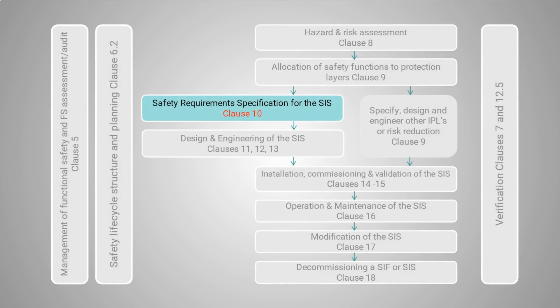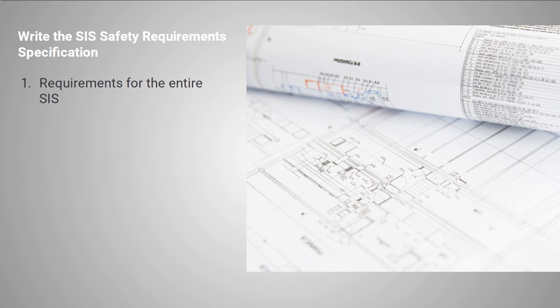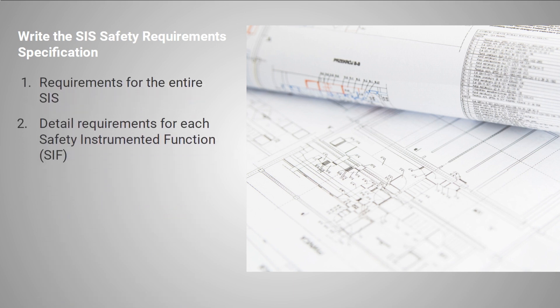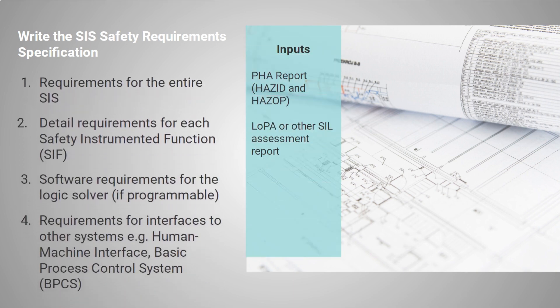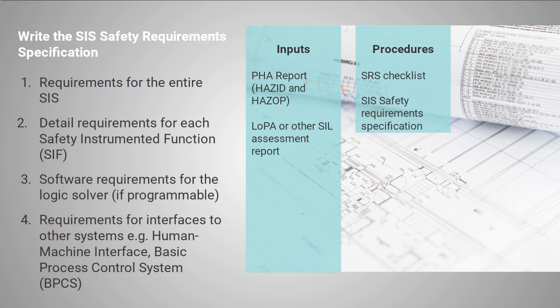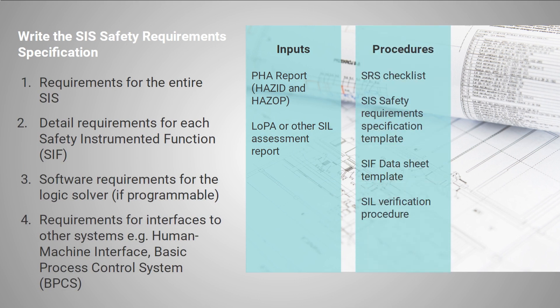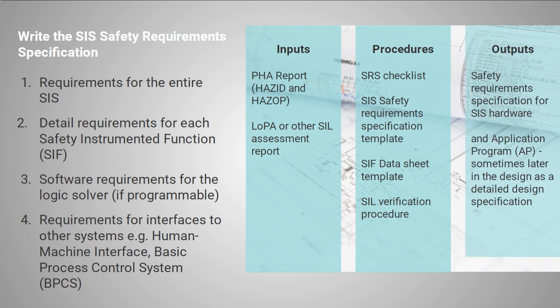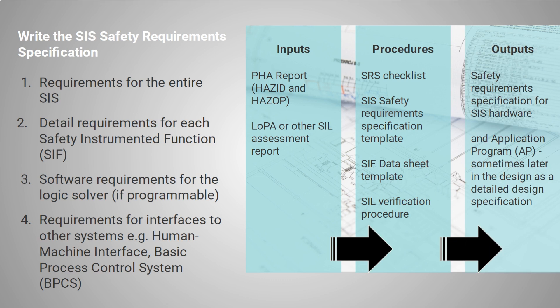Requirements are the blueprint for the SIS design. Functional requirements include what each safety function should do, in terms of what hazard is to be detected and the action to be taken to reach a safe state. Integrity requirements set the standard for the design in terms of safety integrity and system availability.